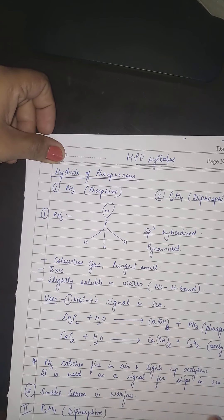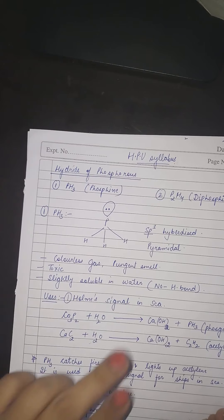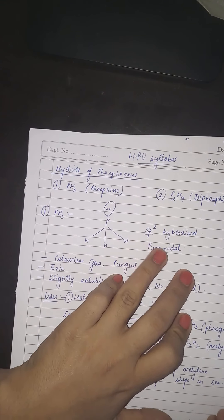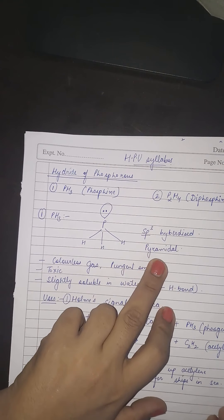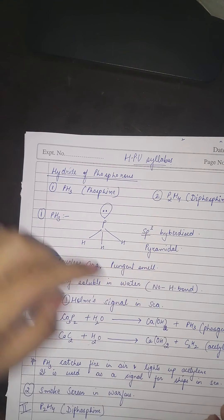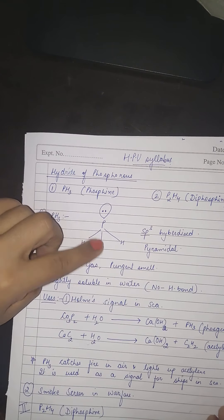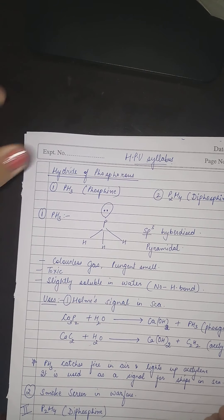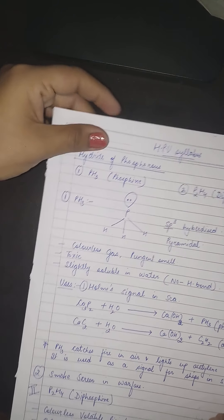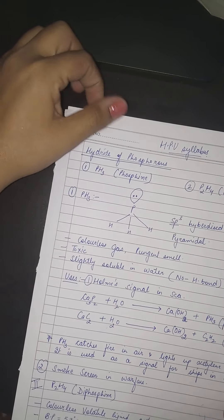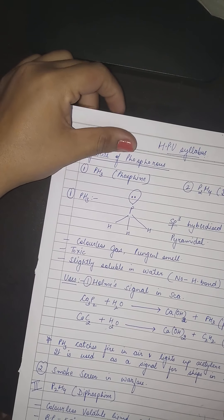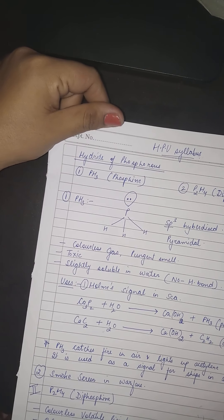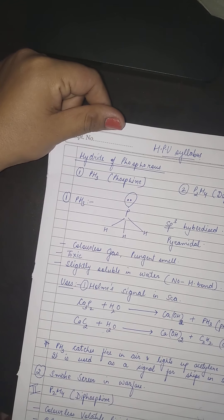Phosphine (PH₃) mein sp3 hybridization hoti hai aur iska structure pyramidal hota hai — teen bond pairs aur ek lone pair. Iske preparation aur chemical properties aap log book se khud karoge; yeh aap ke liye homework hai.